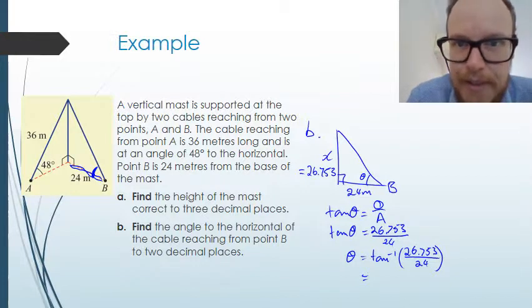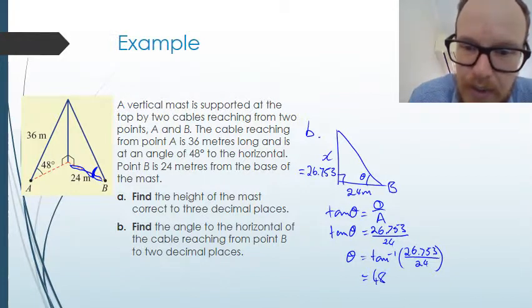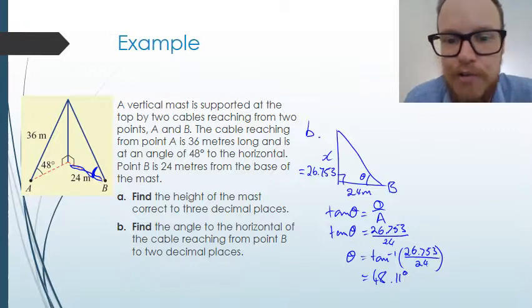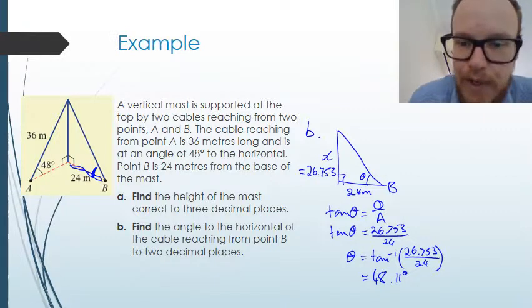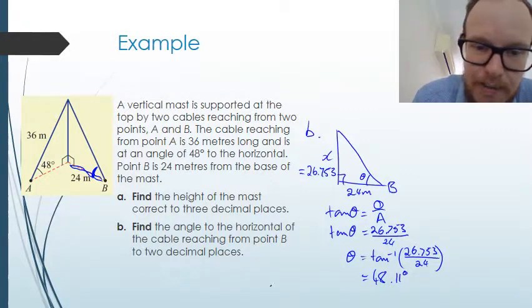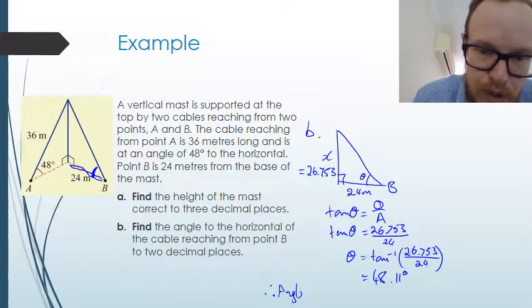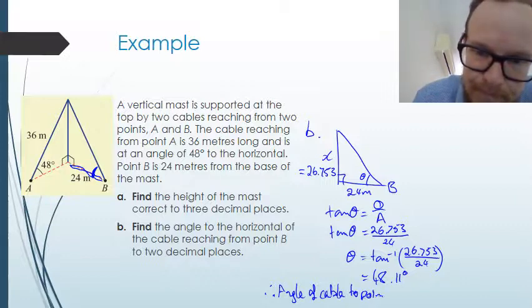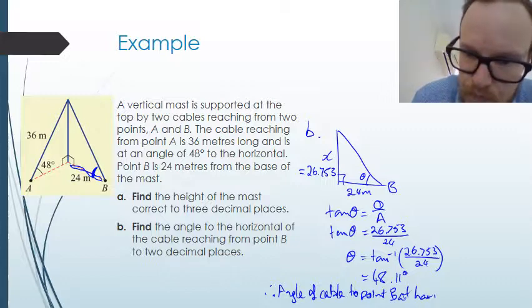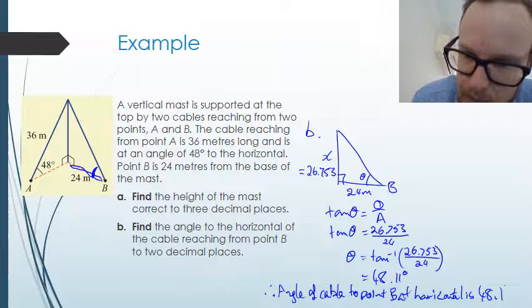So that value is going to be 48.11 degrees to the horizontal. So then we need to finalize our answer by saying therefore the angle of cable to point B is 48.11 degrees.